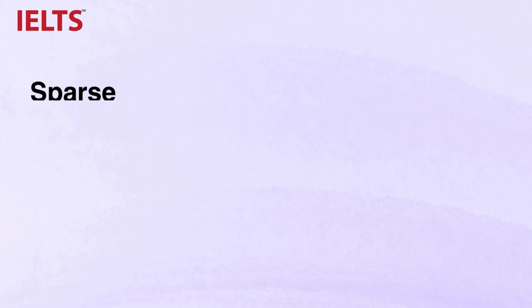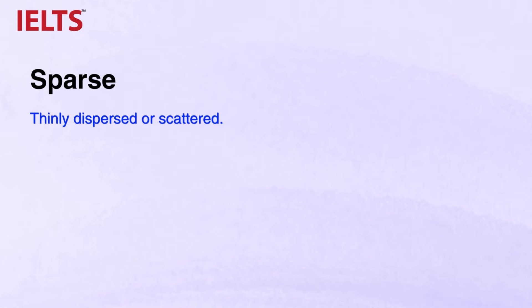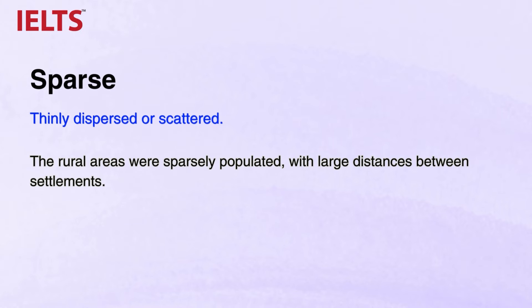Down to the next adjective: SPARSE, meaning thinly dispersed or scattered. The rural areas were sparsely populated with large distances between settlements. So whenever you see things that are spread around the map, like trees, buildings, or facilities, you can use SPARSE.